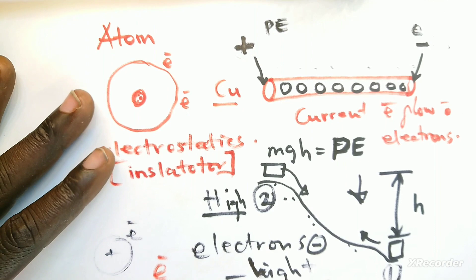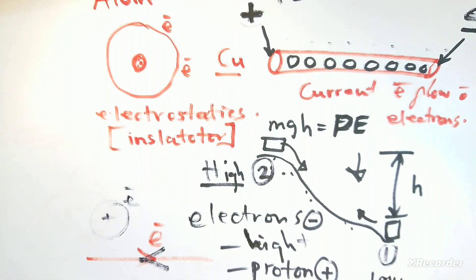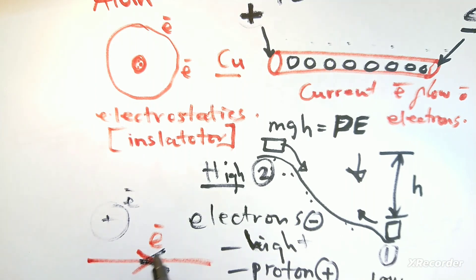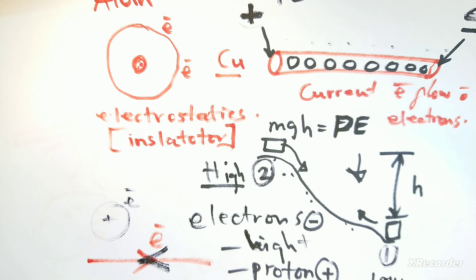That's what we see in this illustration. So when you apply a potential, electrons will flow towards the positive terminal. And that's the idea of current electricity.